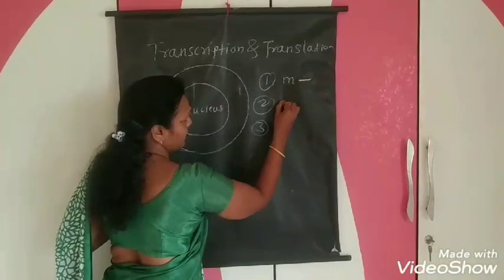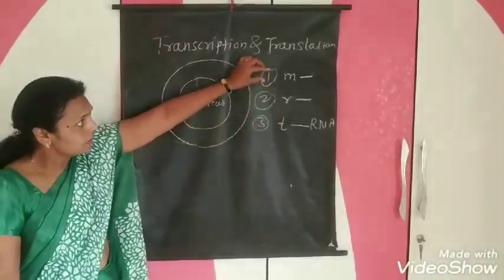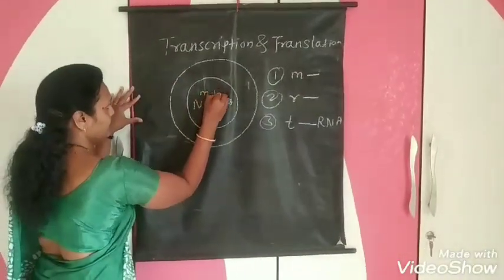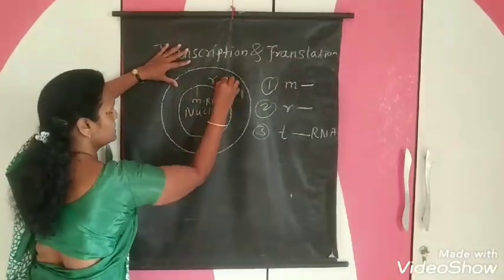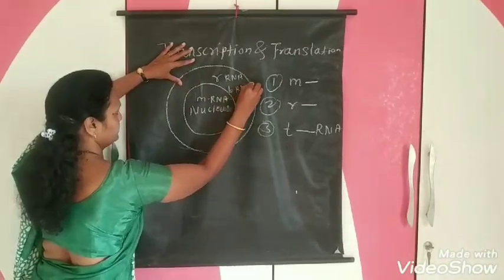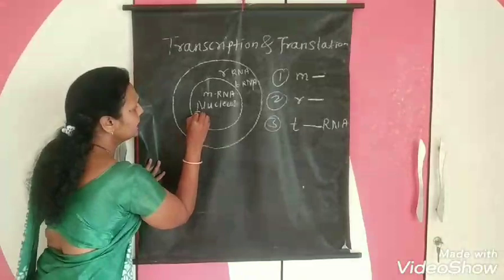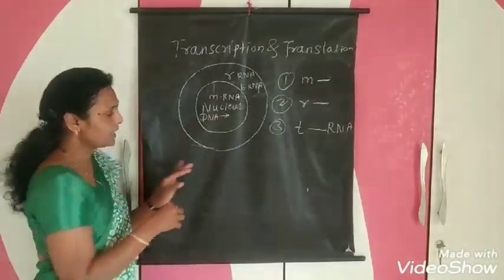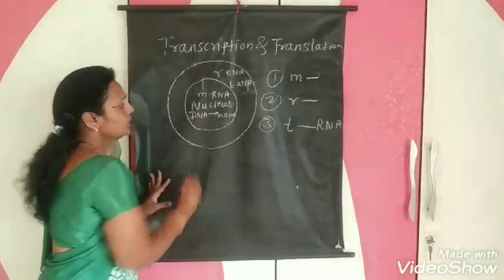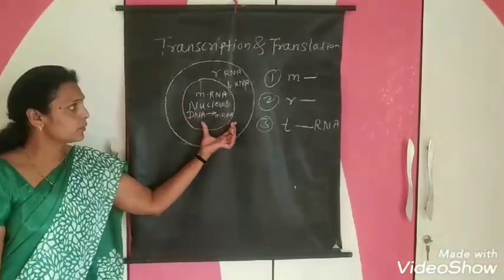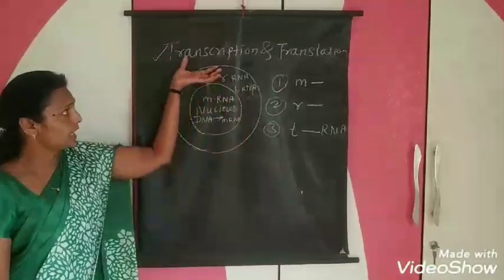There are majorly three types of RNA: mRNA, rRNA, and tRNA. mRNA is present inside the nucleus, while rRNA and tRNA are present outside the nucleus. DNA transfers into mRNA inside the nucleus. The formation of mRNA from DNA is known as transcription.